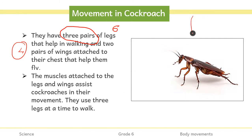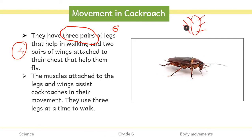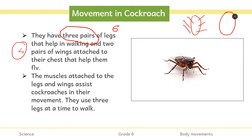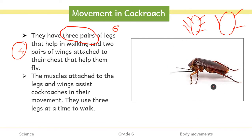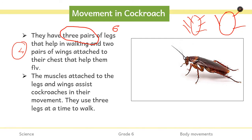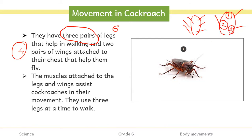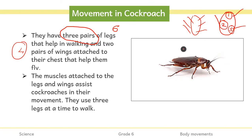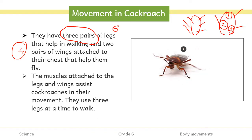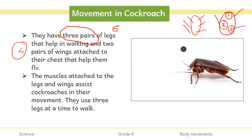When a cockroach moves, three legs are used at a time in an alternating pattern. If it uses the right side of the first pair, it uses the left side of the second pair, and then the right side of the third pair — that is, an alternate pair of legs is used for movement. So to summarize: cockroaches have six legs and two pairs of wings (four wings), and the legs are used alternately.